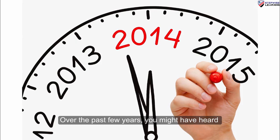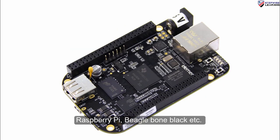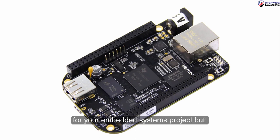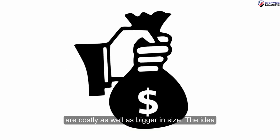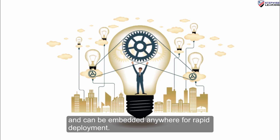Over the past few years, you might have heard about popular boards such as Arduino, Raspberry Pi, BeagleBone Black, etc. These boards will fulfill all your requirements for your embedded system project, but are costly as well as bigger in size. The idea is to use a board which is tiny and can be embedded anywhere for rapid deployment.